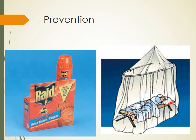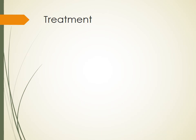For prevention, since the intermediate host — mosquito or other flies — transmits the infection, preventing their bites will prevent the disease. Use of mosquito nets and mosquito repellents is recommended, and eliminating the intermediate host — such as controlling the Culex mosquito in India — is effective. Another preventive strategy is treating the carrier. The drug of choice for treatment is DEC — in the DEC provocation test, the dose is 2 mg per kg body weight, while for treatment it is 6 mg per kg body weight.